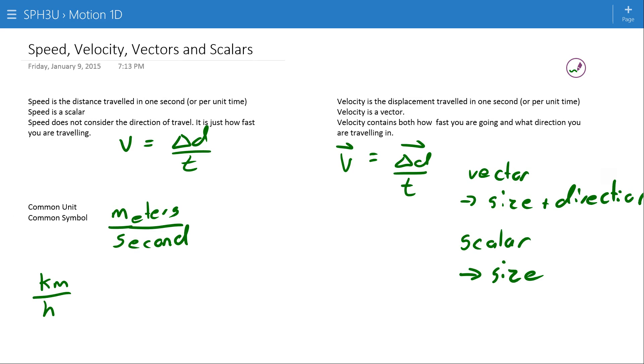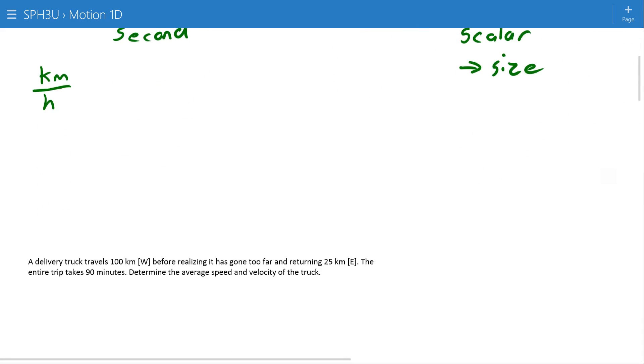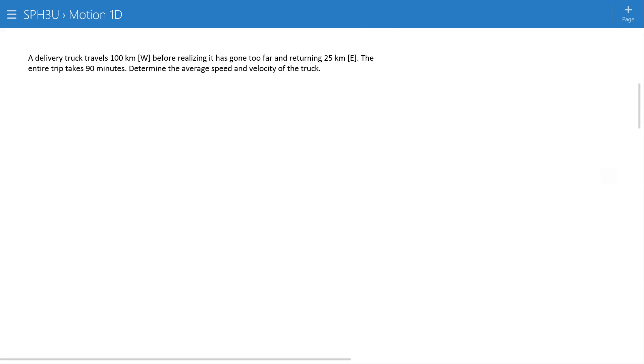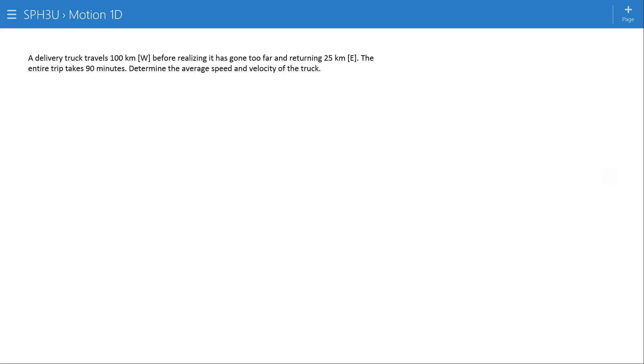So speed is how far you've gone and how fast your position is changing in terms of your total path length. And velocity is sort of a more overall how far you are from where you started divided by the unit time, or how fast your overall position has changed. Directions matter for velocity.